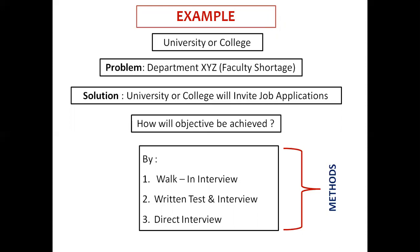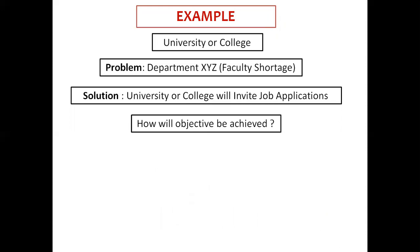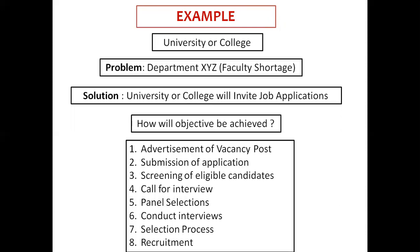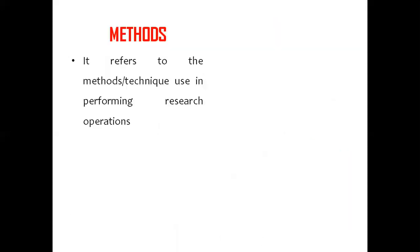Similarly, the method used for getting out any research work is called the research method. Going with the same example, in practice the university will actually have to follow various steps or norms as listed on the screen before finalizing the most eligible candidate for the post. Here you will see that the procedures adopted for recruitment process are followed systematically. Similarly, the procedures adopted for getting out any research problem is called research methodology.